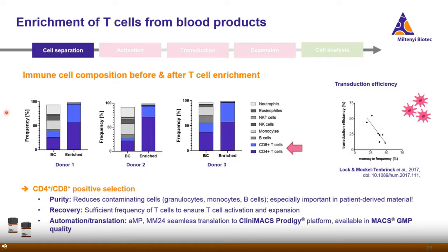Regarding T cells, we assessed the immune cell composition using a predefined antibody panel before and after T cell enrichment for three different donors. These graphs show the heterogeneity in cell composition in the starting material between donors — this would be even more obvious with patient material. However, after enrichment, the amount of CD4 and CD8 T cells between different donors was similar, meaning we started with more comparable, homogeneous samples. Additionally, we observed a correlation between the number of monocytes in the starting material and transduction efficiency, leading to the conclusion that pre-enrichment is also beneficial for transduction efficiency.